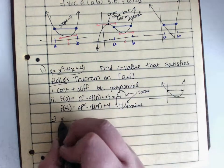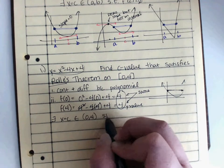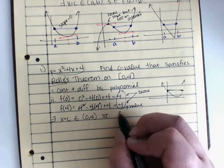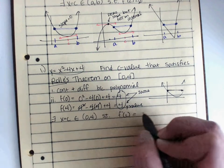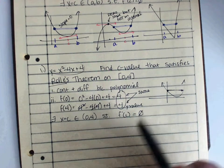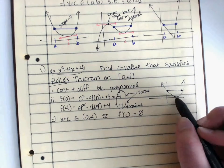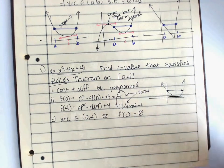There must exist an x equals c within the interval from 0 to 4 such that f prime of c equals that slope, which is 0. Why does it have to equal 0? Because my graph has to go from 4 back to 4. Then it's going to have to hit a flat spot on my graph.